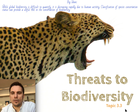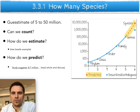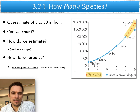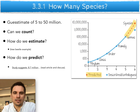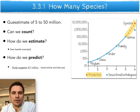We're back with topic 3.3 in your ESS syllabus, looking at the threats to biodiversity. First of all, if there's a threat to the numbers, what are the numbers? There's a massive discrepancy — scientists suggest there are between 5 and 50 million species out there.